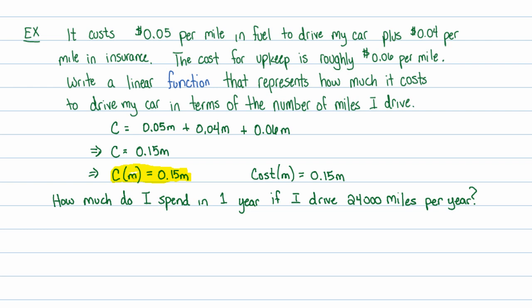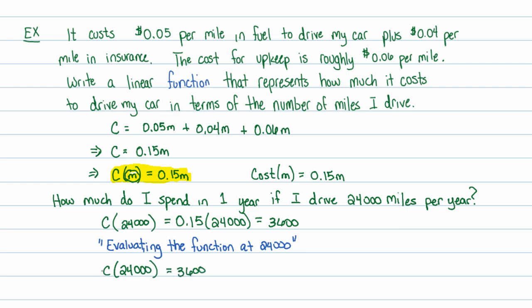Here we have a linear equation that we just wrote as a linear function. There's really no difference between a linear equation and a linear function as far as writing. Very little difference. Now, I can ask some really cool questions based on this function notation. How much do I spend in a year if I drive 24,000 miles per year? In other words, how much do I spend if I drive 24,000 miles? So I'll evaluate the function at 24,000. This is called evaluating the function at 24,000. Plugging 24,000 in wherever I see an M, I get 0.15 times 24,000. And when I multiply that out, it should be about 3,600. So in other words, C of 24,000 is equal to 3,600.